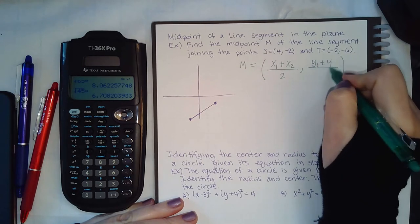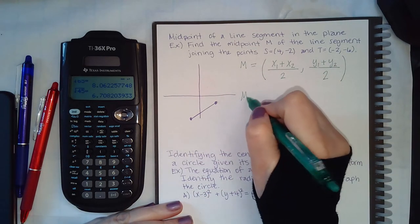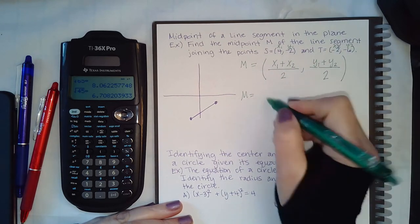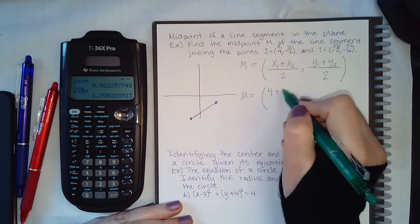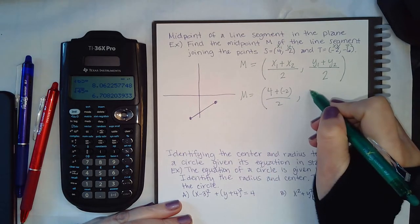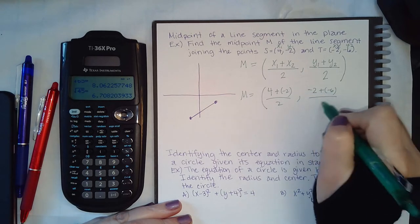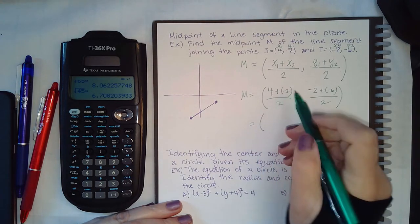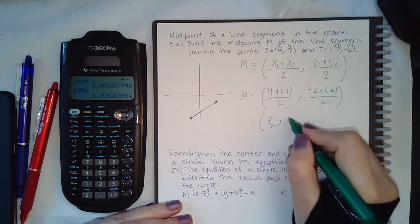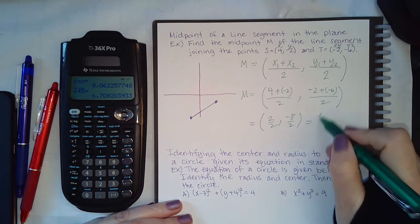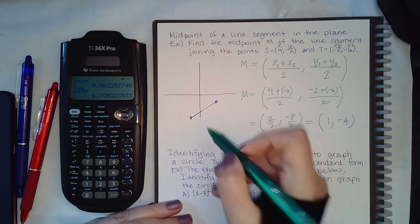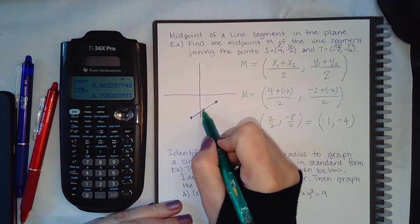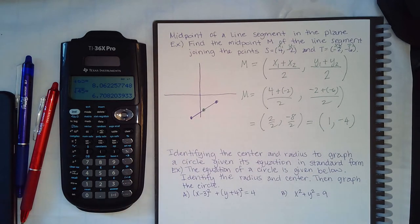In this case, I'm going to call this one x1, y1, x2, y2 and plug them into the formula. So 4 plus negative 2 over 2, and negative 2 plus negative 6 over 2. This becomes 2 over 2, this becomes negative 8 over 2, so the value I get is 1 and negative 4. So if I look at this: 1 and negative 1, 2, 3, 4 would be right here, which visually does look like the middle of that line segment.